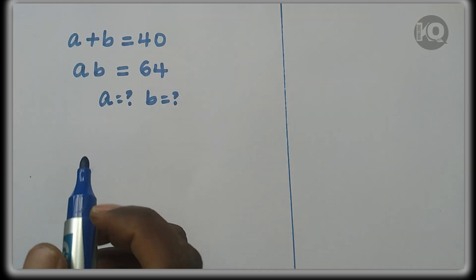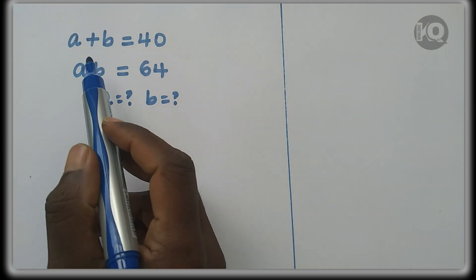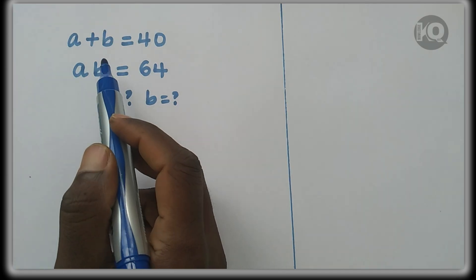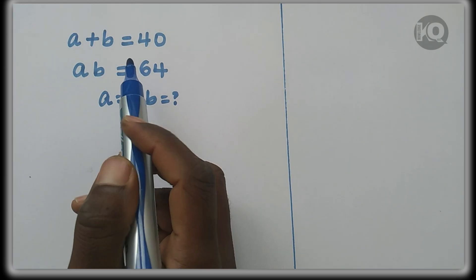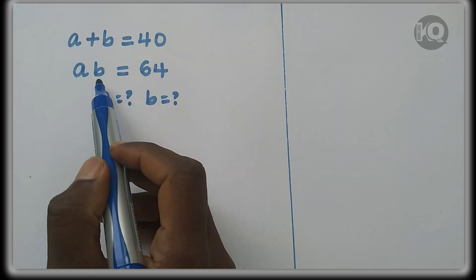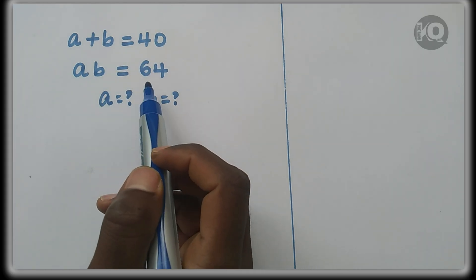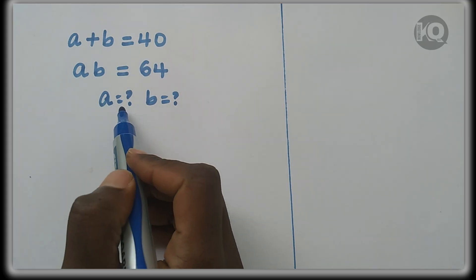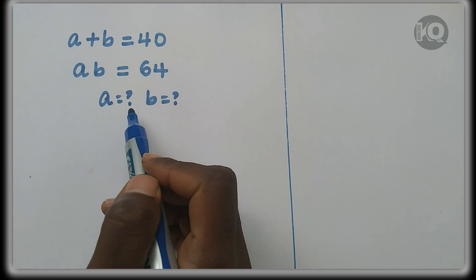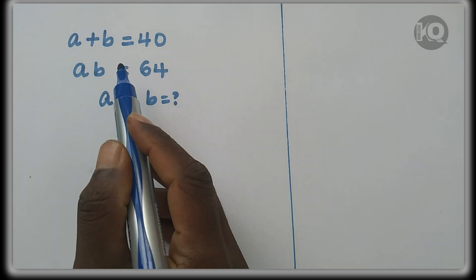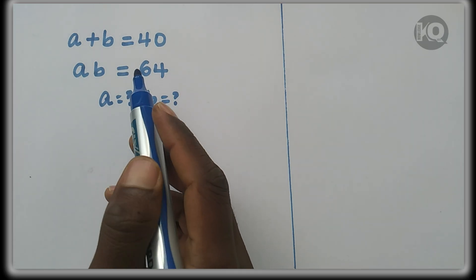Hello guys, welcome. We need to solve this system of equations: A plus B equals 40, and A times B equals 64. Find the value of A and B from these systems of equations.